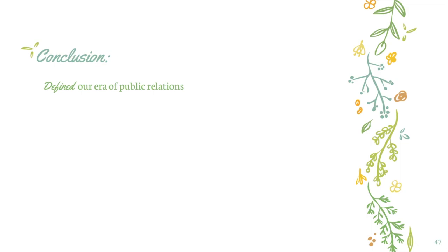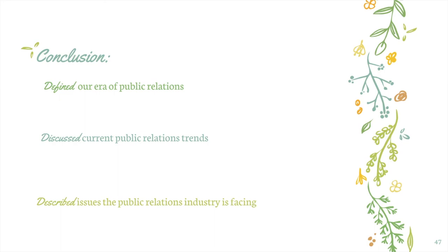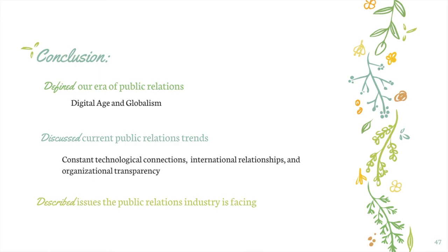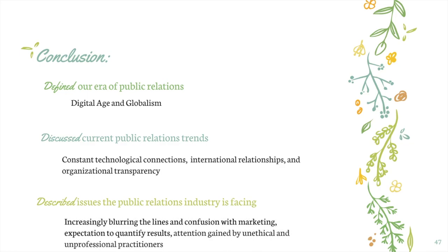The goal of this video was to address the current issues in public relations. This involved defining our current era of public relations, discussing current trends in PR, and lastly describing current issues in PR. We defined our current era of public relations to be the Digital Age and Globalism and discussed the importance of technology in PR. We discussed constant technological connections through the rise of micro-influencers, addressed international relationships by looking at the Coca-Cola One Brand worldwide campaign, and took a look at the importance of organizational transparency through the racial allegations against the clothing brand Reformation. We described issues in PR beginning with blurring the lines between public relations and marketing, how social media is a tool both professions use, the issue of analyzing PR results and various measurement options, and the 2010 example of Activia yogurt and the Dannon Company to display unethical PR.